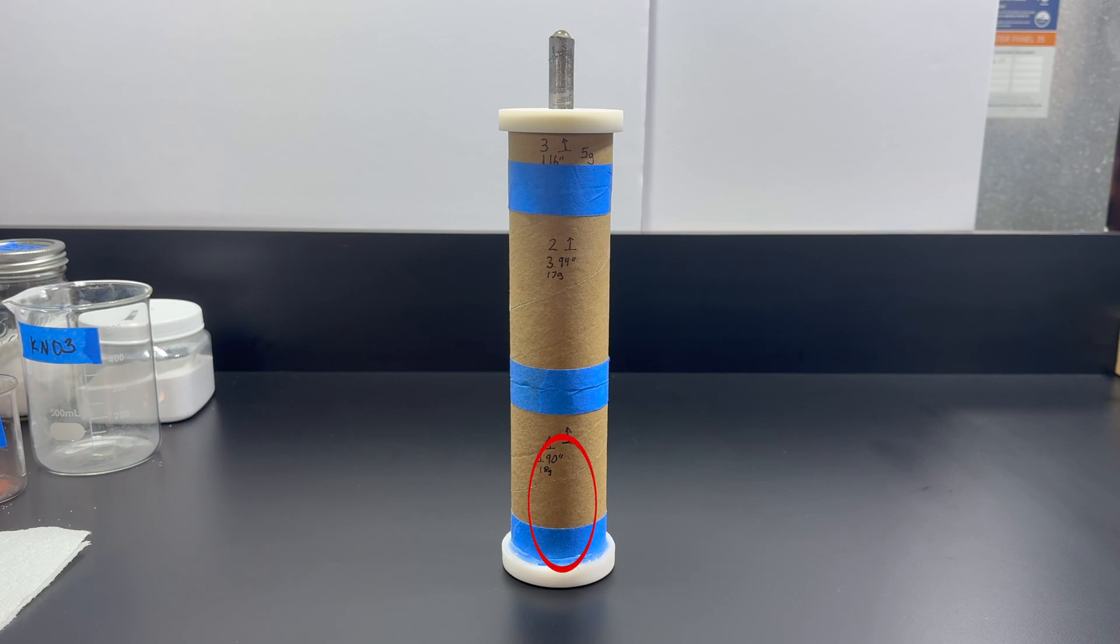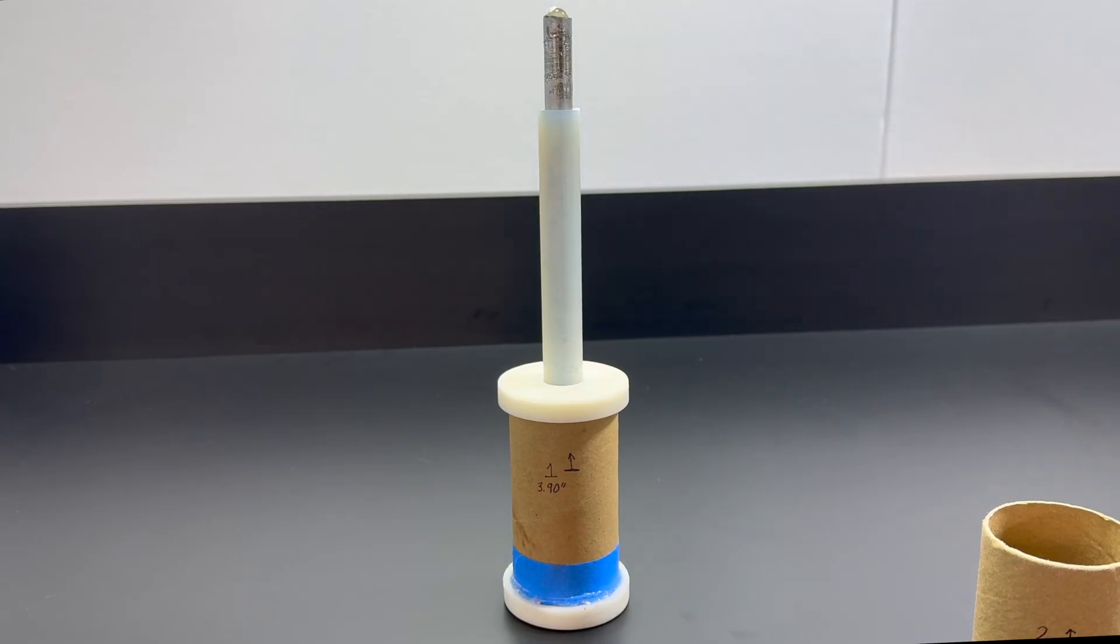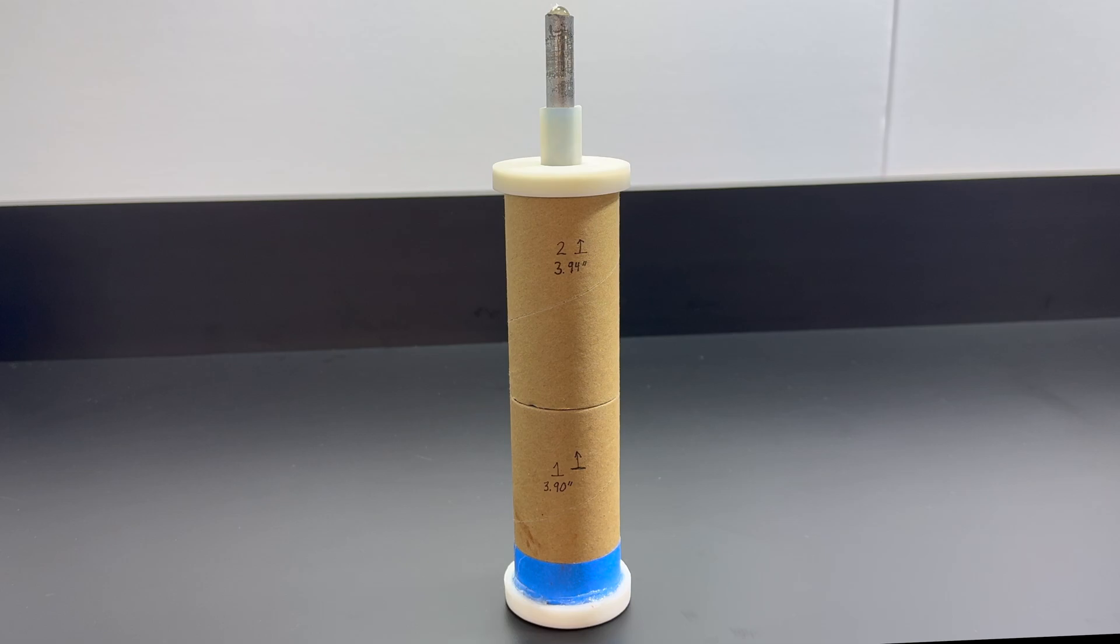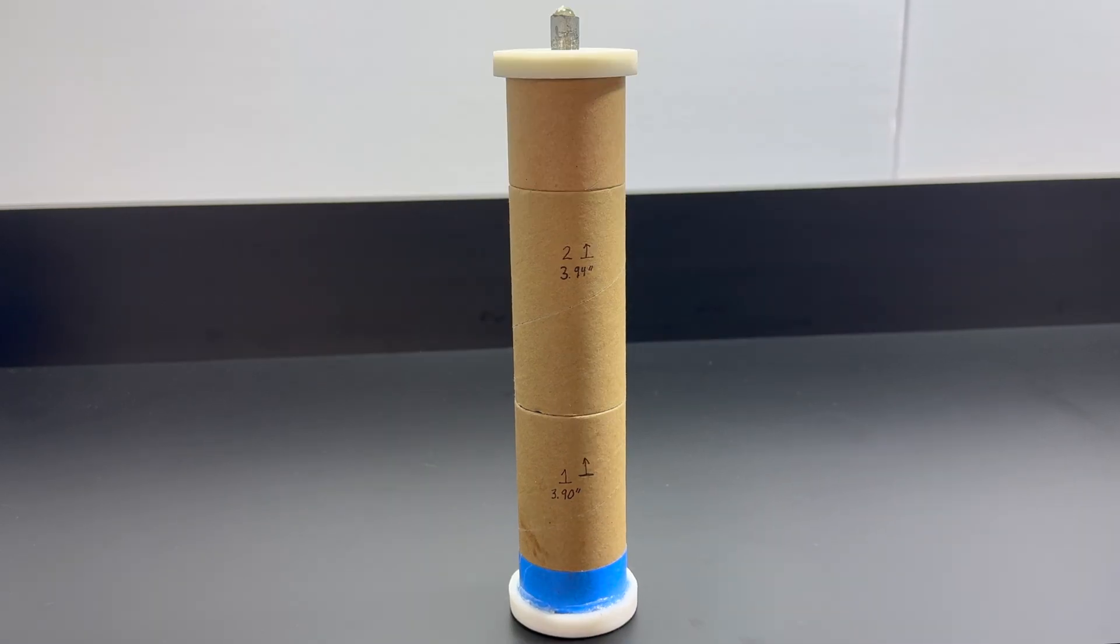The finisil sits inside of the propellant and is removed after casting. I use a silicone tube with a bolt through it to connect the finisil and core the propellant. As you'll see, this method is a bit like building a skyscraper. You start from the bottom and build your way upwards.